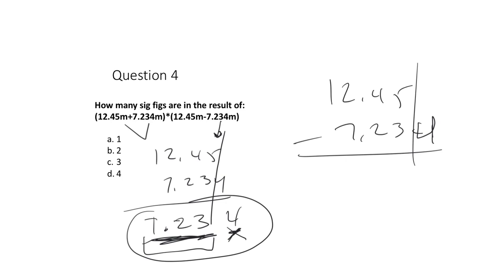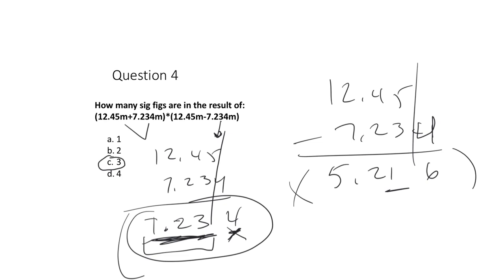Then we do the subtraction step: 12.45 minus 7.234. That step should be good to the hundredths placeholder. Doing the subtraction gives 5.216. I could round this to 5.22 or carry the 6 for the next calculation, where I multiply these two numbers together. Three sig figs times three sig figs should be rounded to three significant figures. Working out the answer would be 37.7.